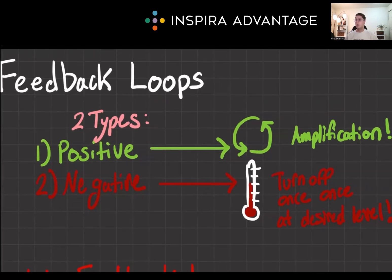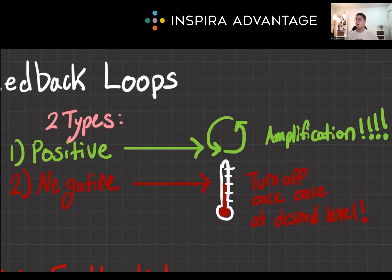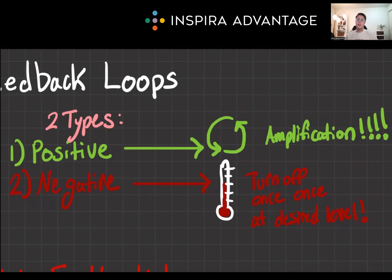It is absolutely crucial to be able to differentiate between the two. Negative feedback loops are the most common you're going to see tested. Think of them like a thermostat — they turn off the response once the desired level is reached. Most hormonal regulation in the body happens this way to maintain homeostasis. Positive feedback loops, on the other hand, amplify the response until an event occurs. They are a lot less common, but super important for things like childbirth.